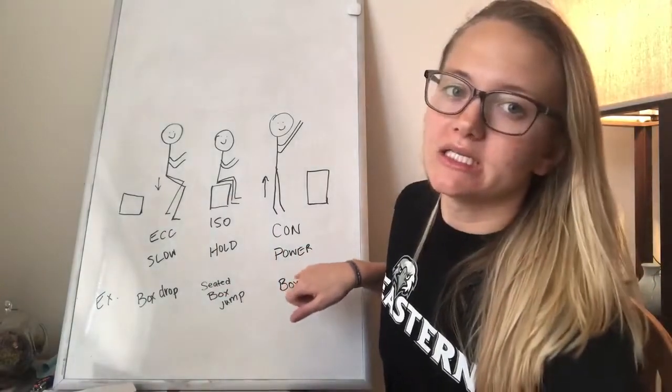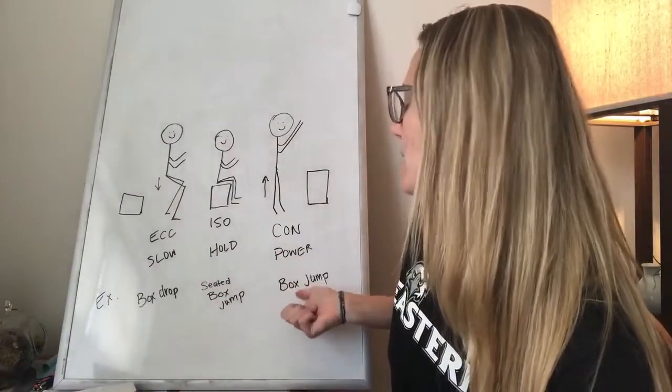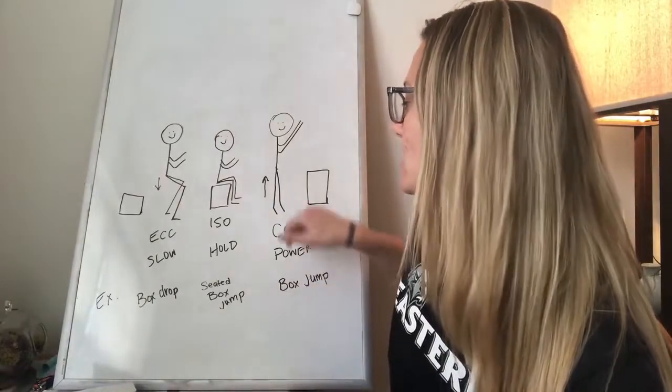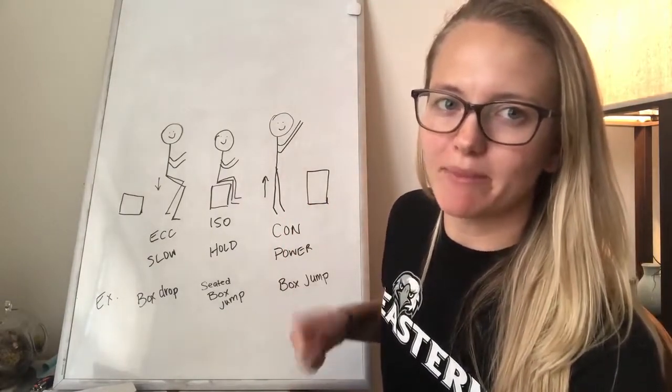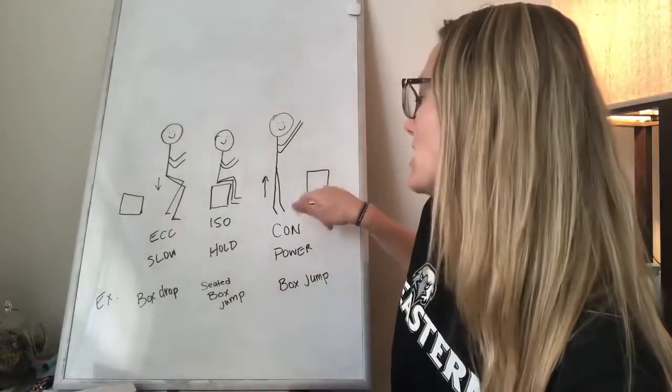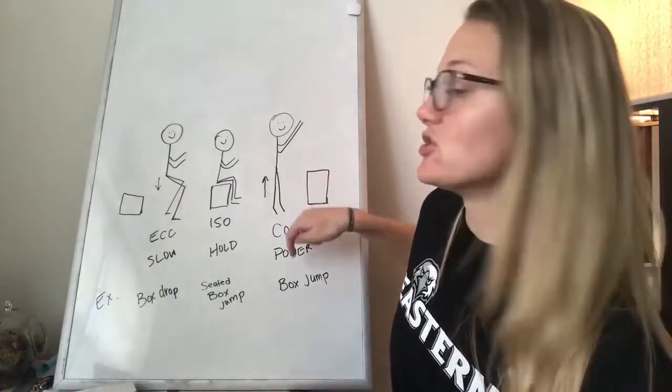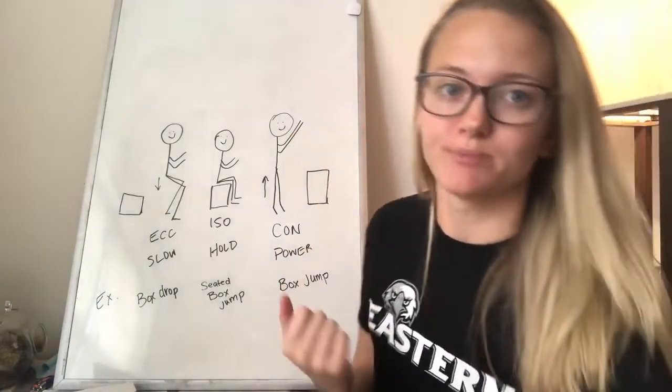Then the last one is a concentric box jump. So essentially, this is a box jump is going to get all three phases in because you are slowly lowering a little bit, you're getting that little bit of a dip, and then you're powering up to land on the box. But the concentric phase is where you get that triple extension where you extend really nice and tall to get on to the box.